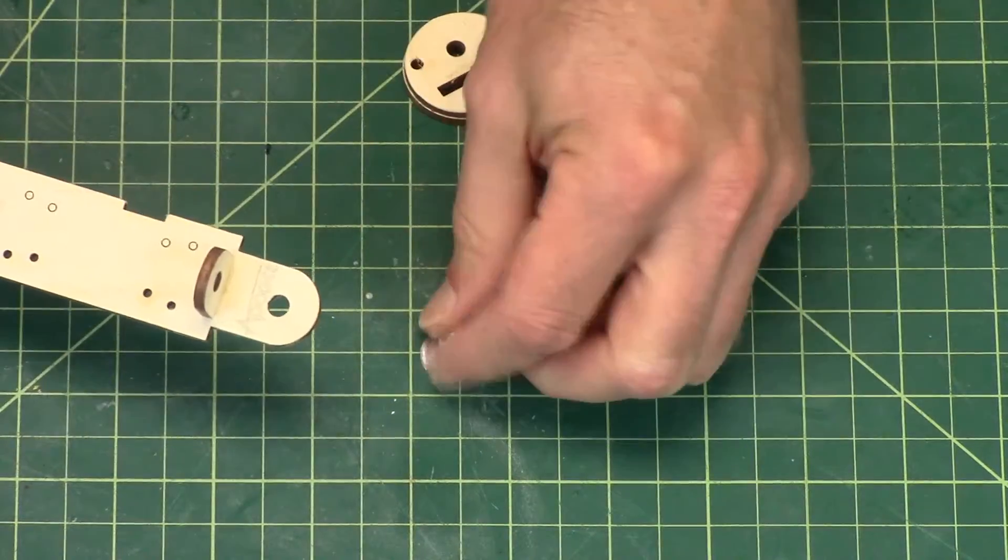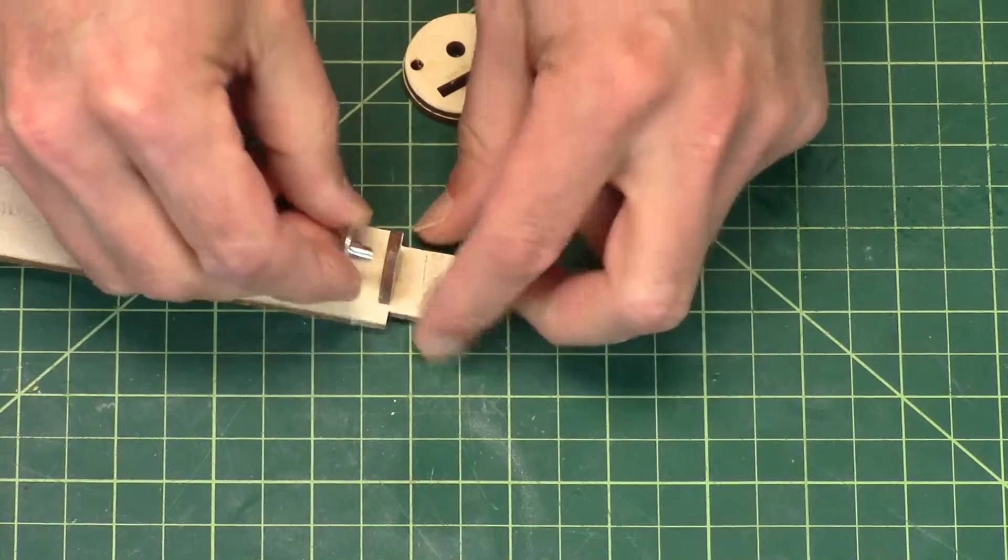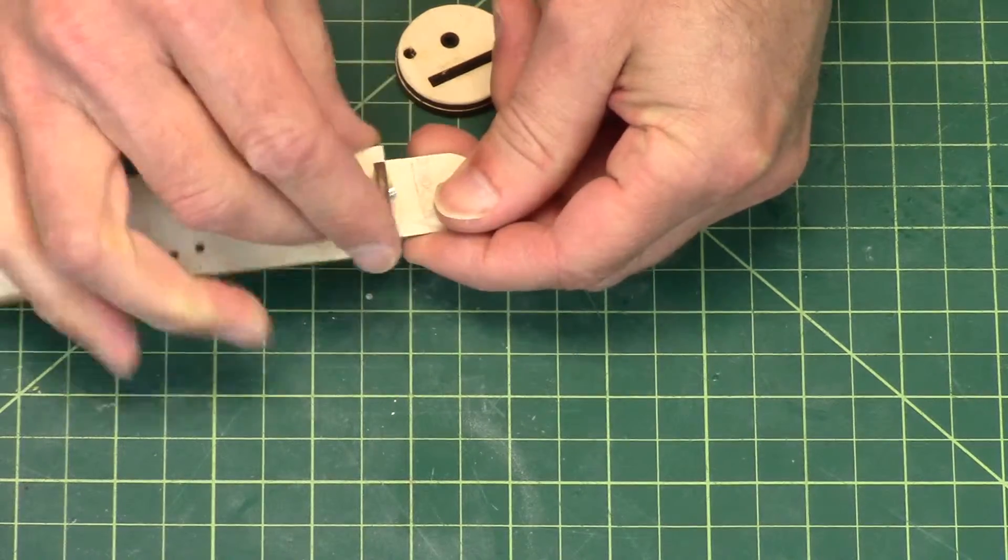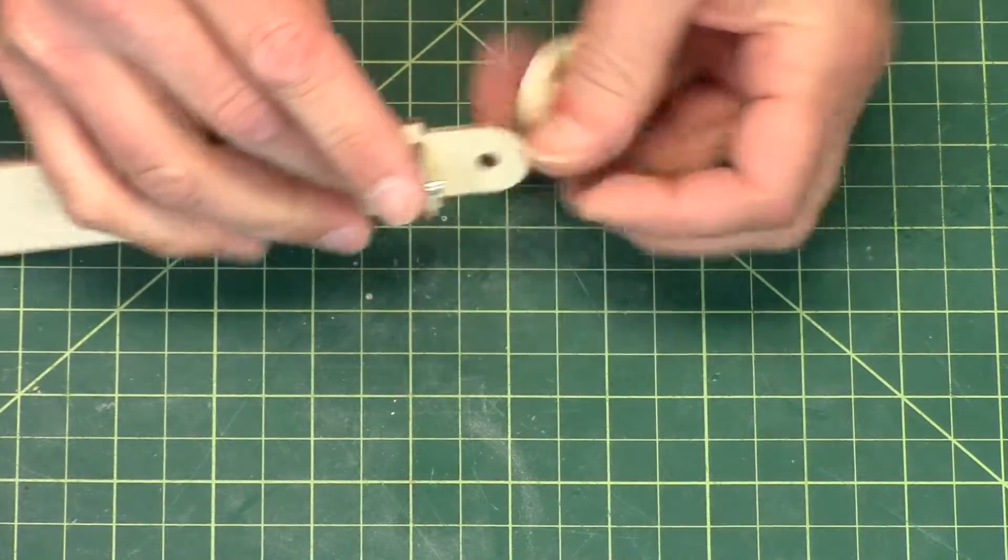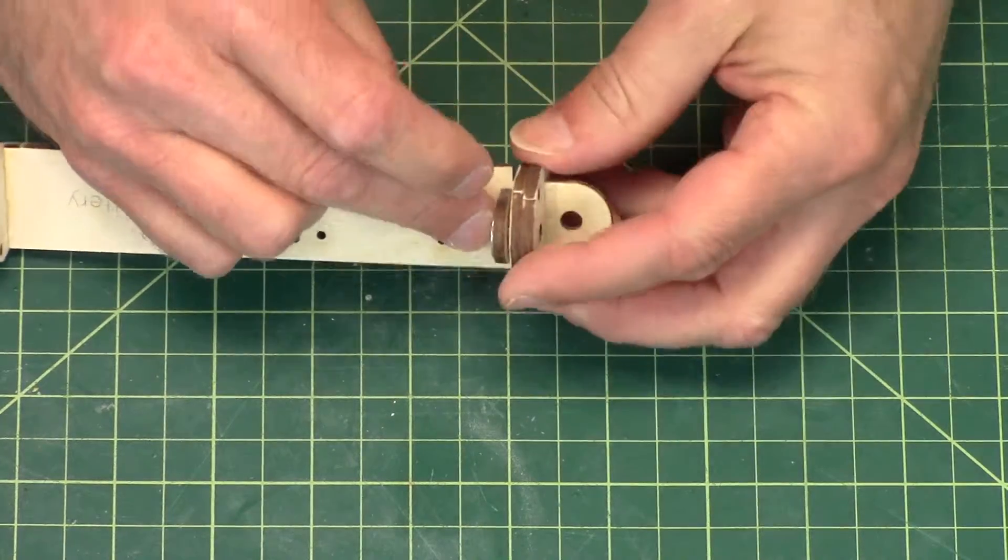Okay, our next step is to put the weld nut on, and what this does is it holds this other bulkhead onto the ebay once we all slide it together.